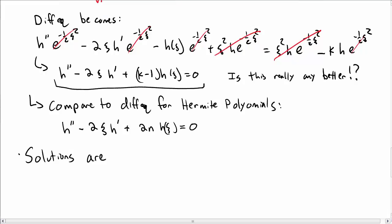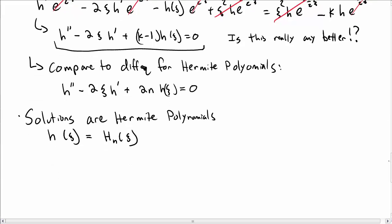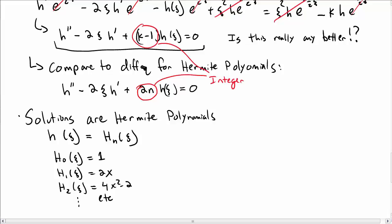So that's cool. So what that means is that our solutions to our differential equation are Hermite polynomials. So the H(ξ) that we started with are really the Hermite polynomials H_n(ξ). Remember Hermite polynomials: H₀ is just 1, H₁ is 2ξ, H₂ should be 4ξ² - 2, and so on and so forth. Notice also that this is an integer here—2n is an integer. The corresponding part for our equation is K - 1.